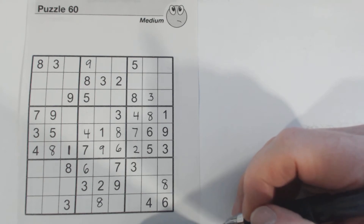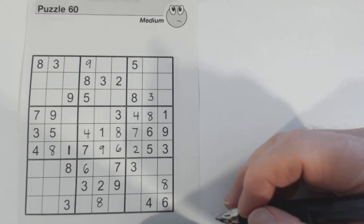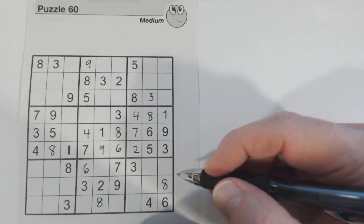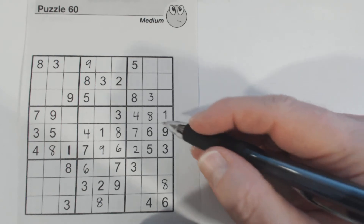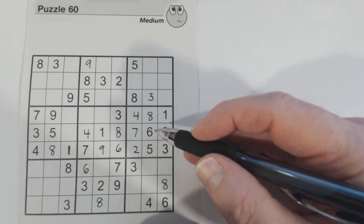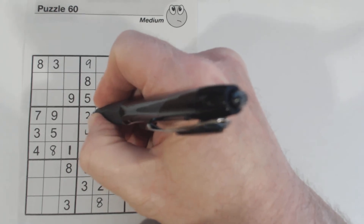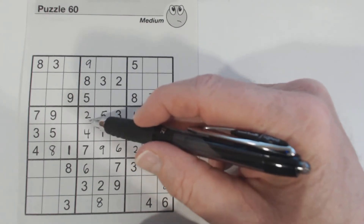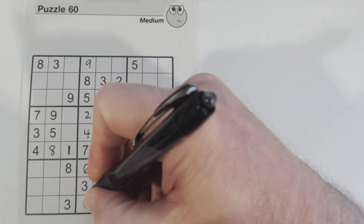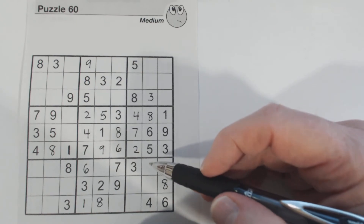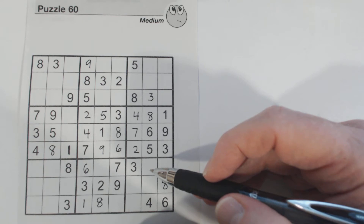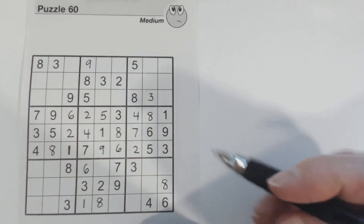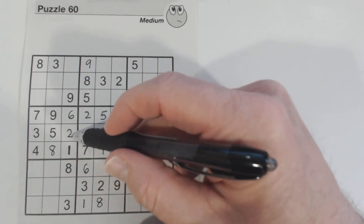We had two-five twins — the only two numbers missing in this place — and there's a five there. Let's just fill this one in here; that should be obvious. Again, we only had two and six missing in this square; there's a two here, so two and six.